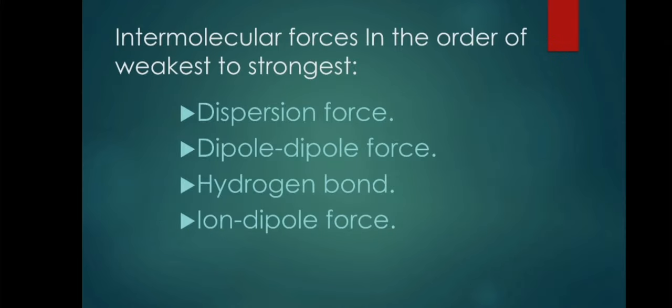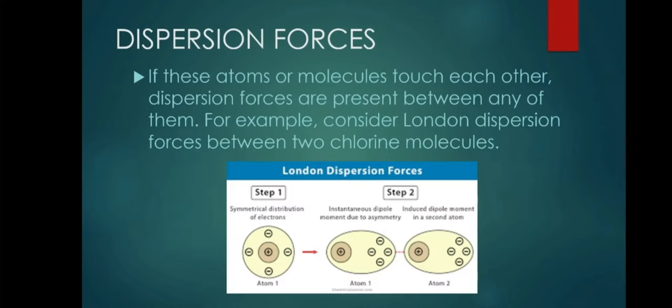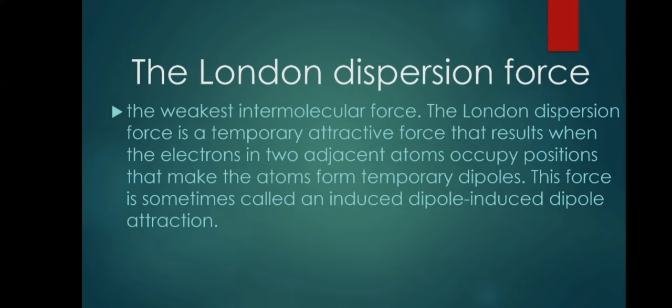There are different types of intermolecular forces, in order of weakest to strongest. The weakest is the dispersion force, then dipole-dipole force, hydrogen bond, and the strongest of all is ion-dipole force. But let's talk about the first three forces. Dispersion forces: if these atoms or molecules touch each other, dispersion forces are present between any of them. For example, consider London dispersion forces between two chlorine molecules. That is an example of dispersion forces. The London dispersion force is the weakest intermolecular force. It is a temporary attractive force that results when the electrons in two adjacent atoms occupy positions that make the atoms form temporary dipoles. This force is sometimes called induced dipole attraction.